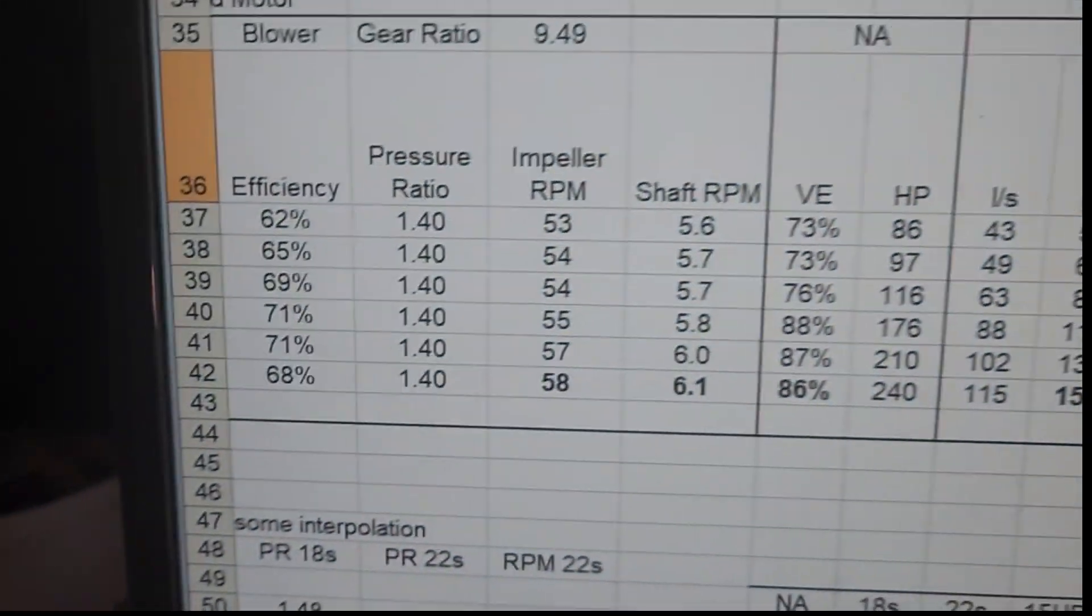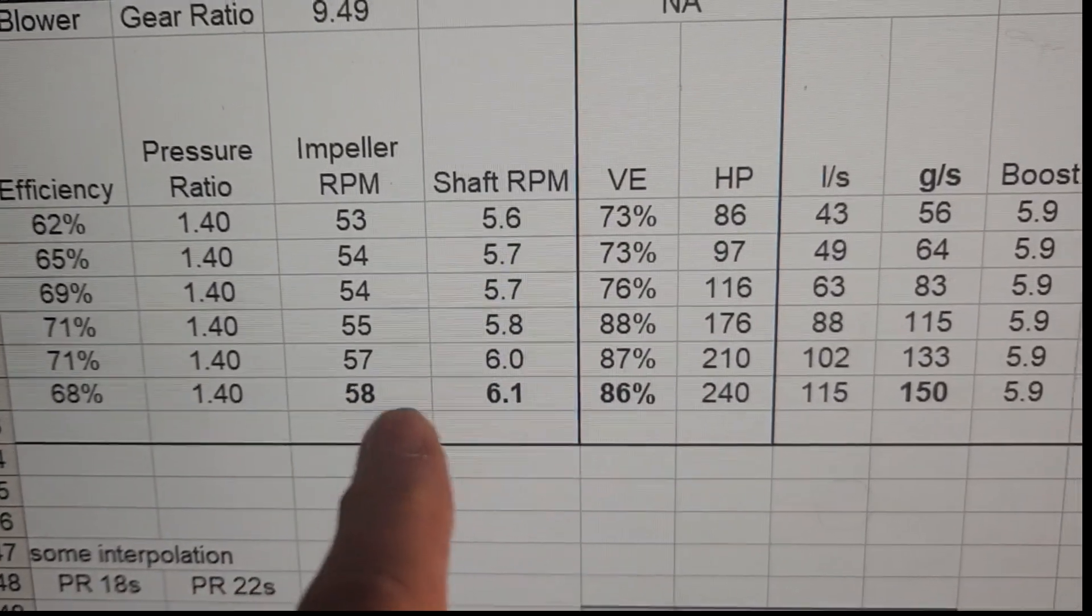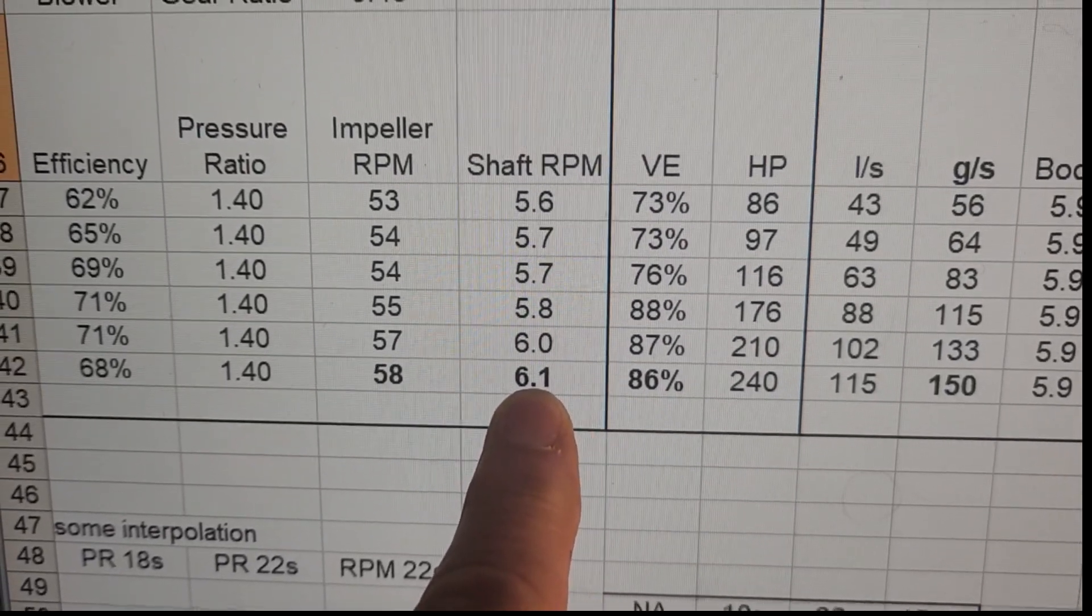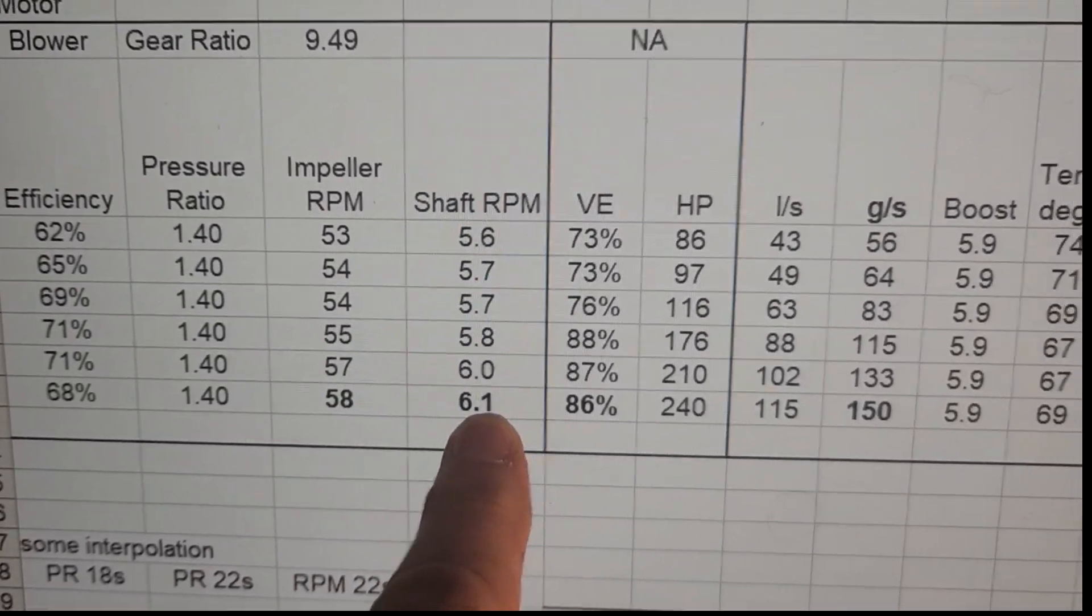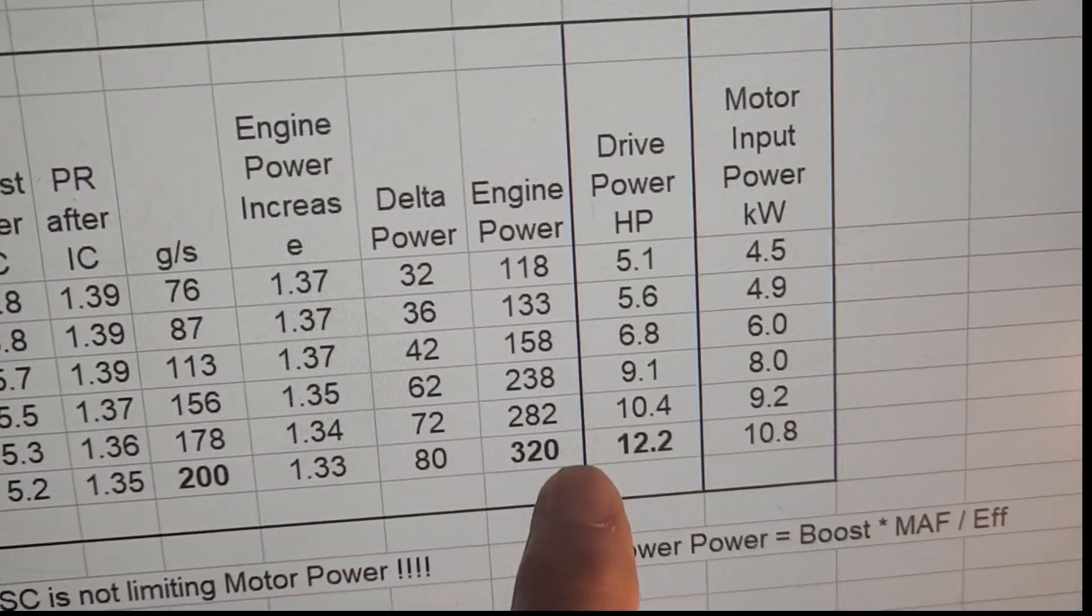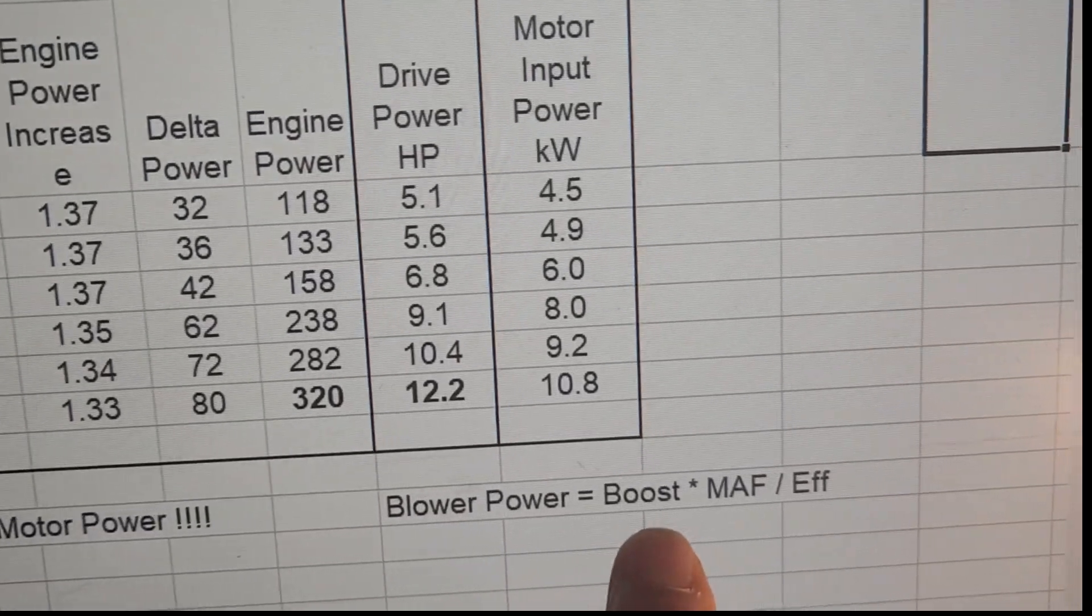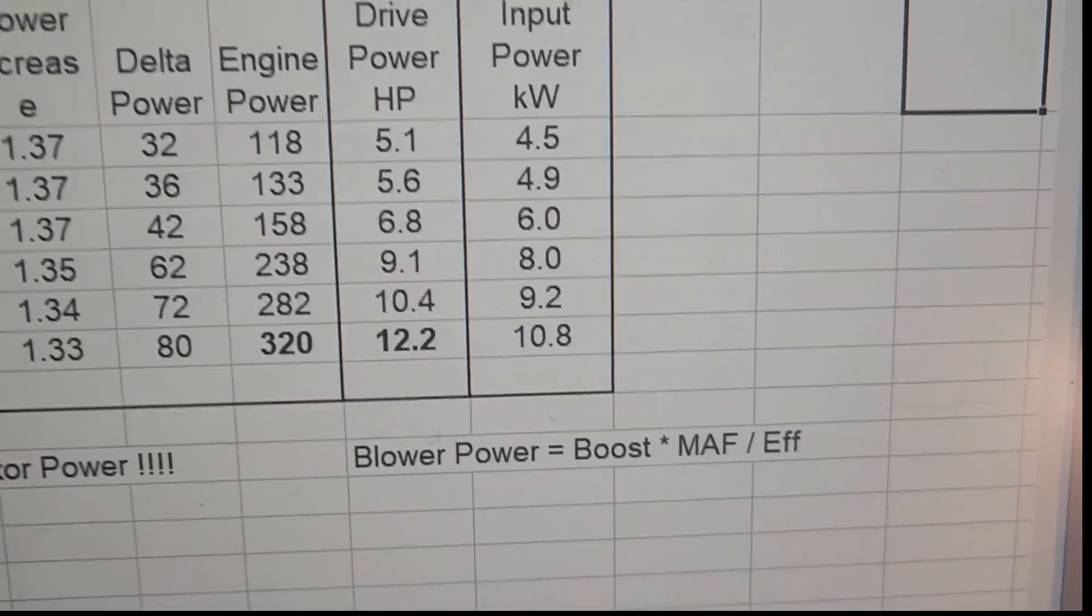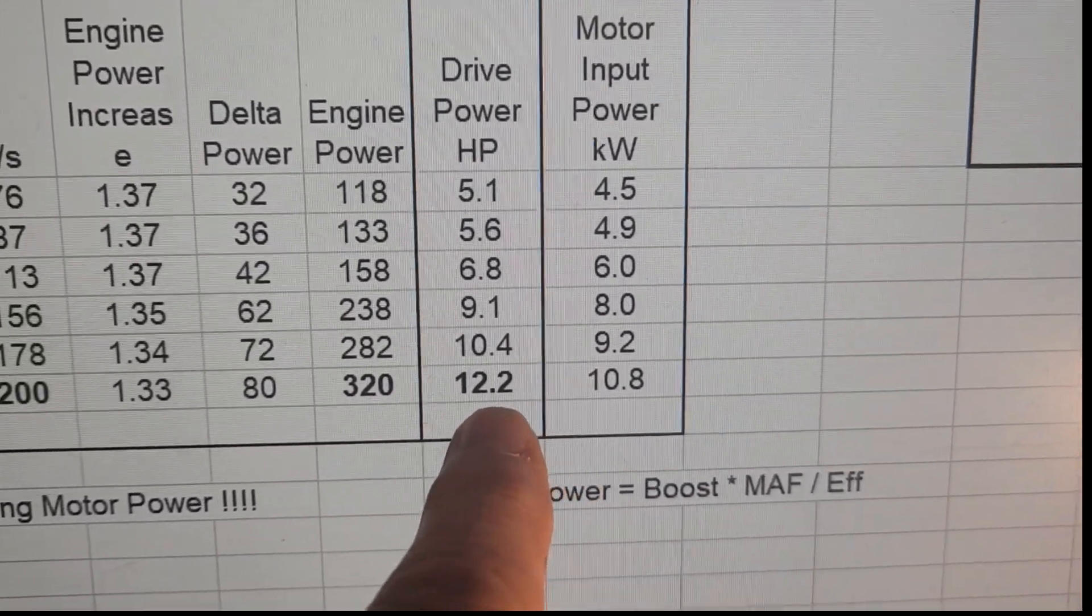Here's the blower map. Here's our 200 grams per second. That's 0.2 kilograms per second. There's our 1.4 pressure ratio. And there's a 60,000 RPM line. So we're sitting here close to 60,000 RPM, about 58,000 RPM. So this is our operating point at max power. That thing's about 68% efficient at that power. Rotrex gives you adiabatic efficiency, which includes all the power losses.